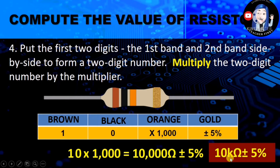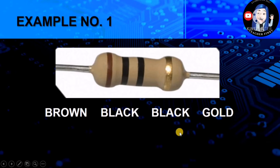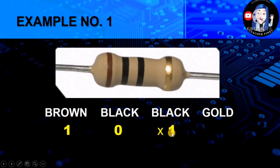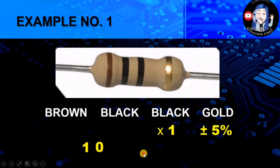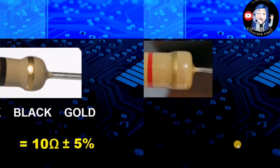Let's simplify using the prefix K, which means kilo — a prefix for 1,000. Example 1: the colors are brown, black, black, gold. Brown has 1, black is 0. Now, when it comes to the multiplier, black has a value of 1, not 0 — because if it were 0, anything multiplied by 0 would be 0. So, 10 times 1 equals 10 ohms, and gold has plus/minus 5%. For brown, black, black, gold, the value is 10 ohms plus/minus 5%.